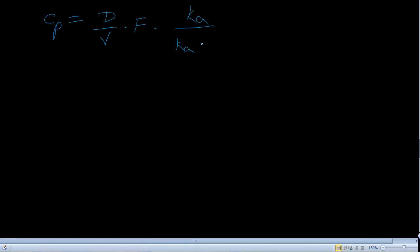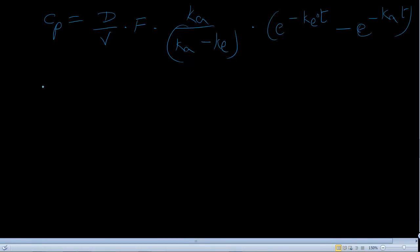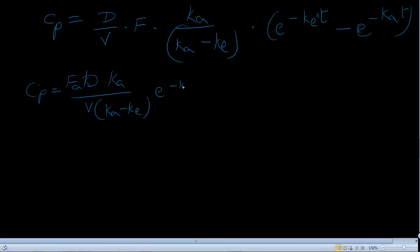over ka minus ke, times e to the power of minus ket, minus e to the power of minus kat. That is the full formula. You may also have seen it written as: F times dose times ka over V times (ka minus ke), times (e to the power of minus ket minus e to the power of minus kat).